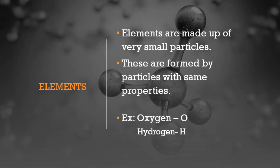Elements are made up of very small, minute particles formed by particles with the same properties. For example, oxygen and hydrogen are two different elements. Oxygen has many atoms of oxygen, and hydrogen has different atoms of hydrogen. All the particles present in an element have the same property. Oxygen is different, hydrogen is different — each is a separate element.